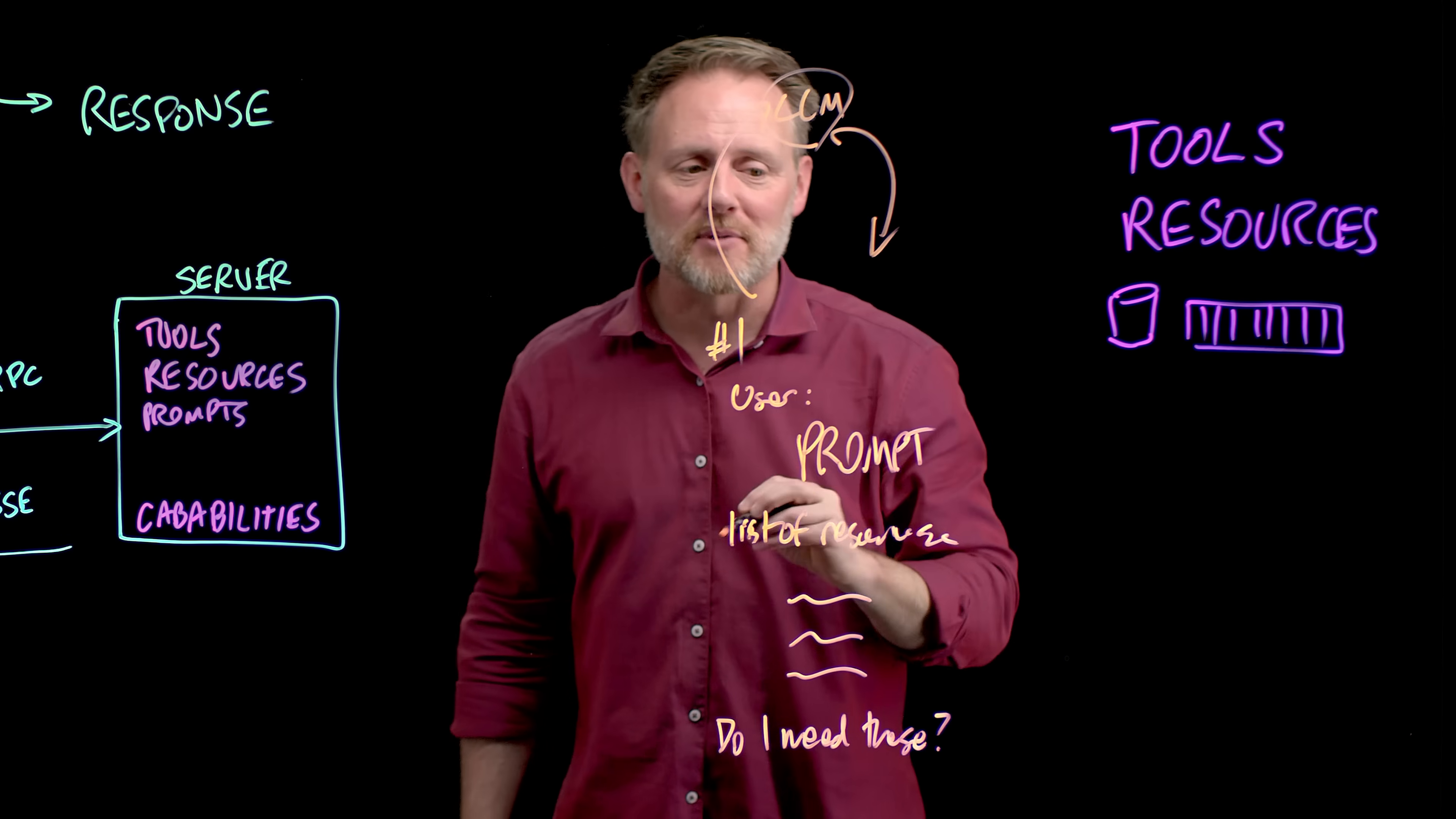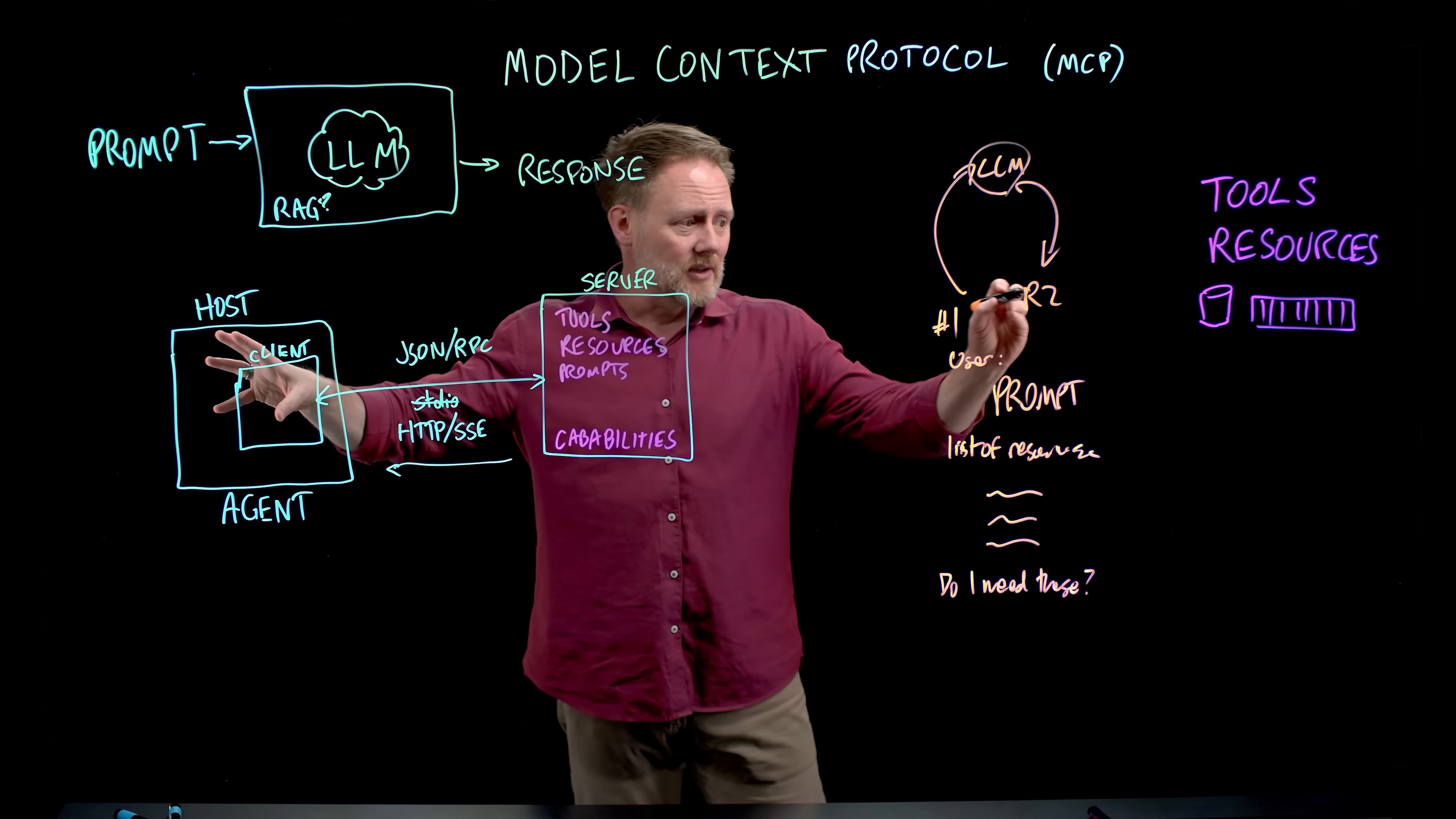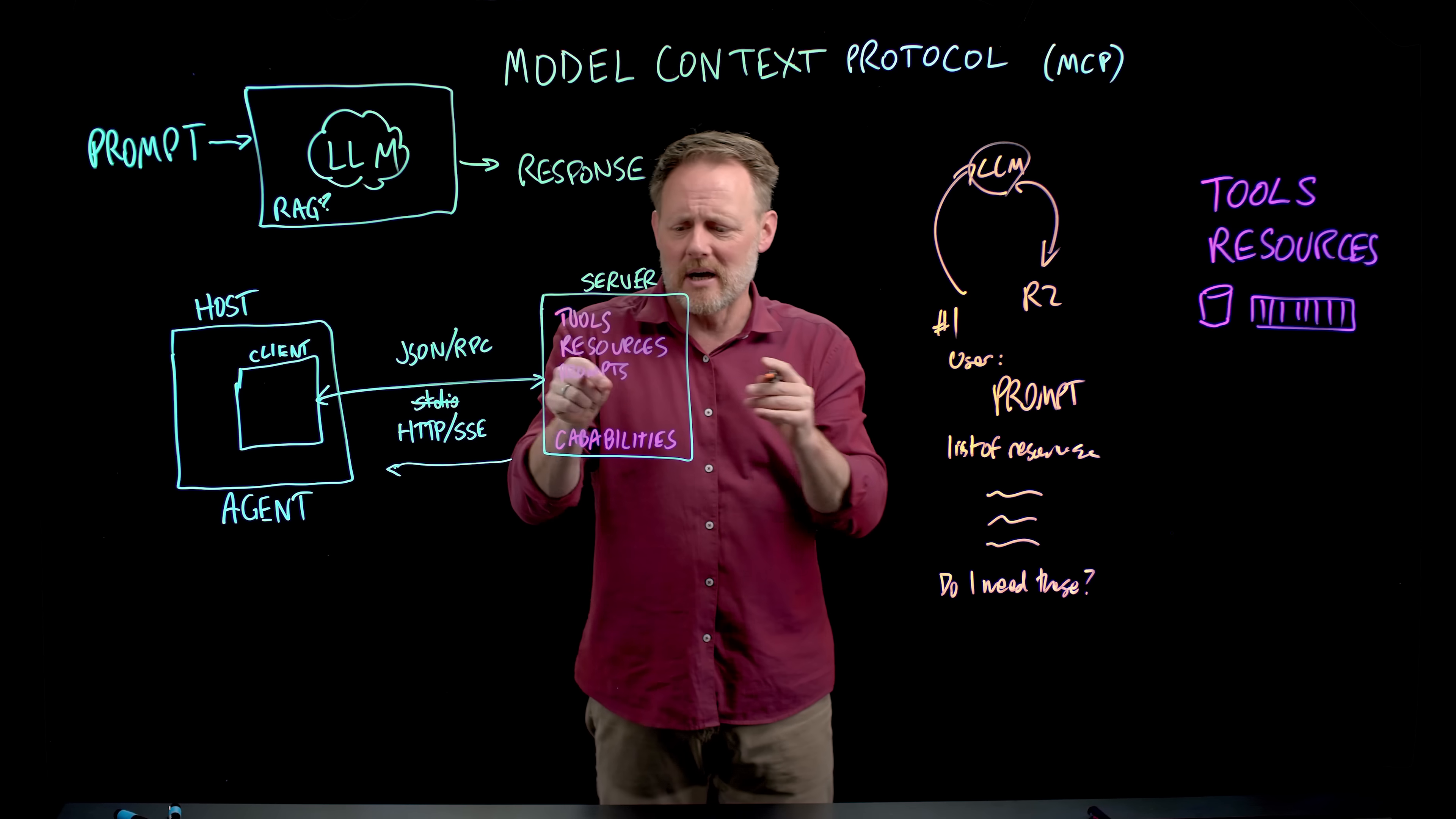And it tells us in return, yes, you need resource two. That resource two, that list of coffee shops in the area, that looks super interesting. Please give me that. And so now my client says, oh, resource two, I know where that is. I'll just go ask my MCP server for the details of resource two, maybe passing some parameters, maybe not.